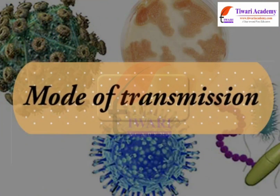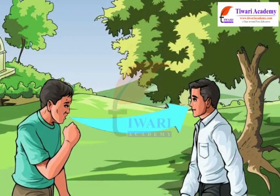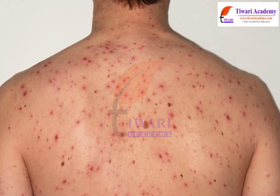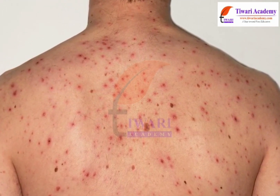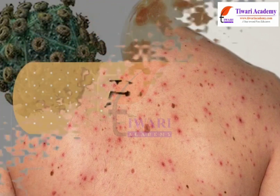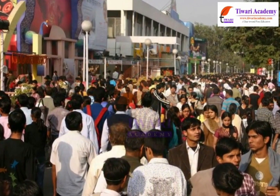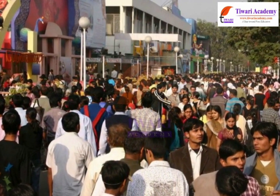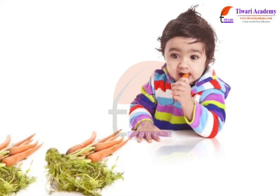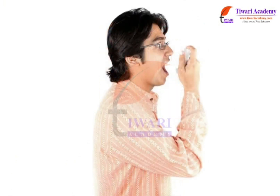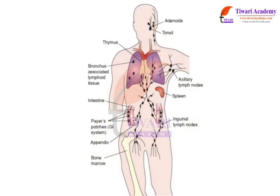Mode of transmission refers to the method of transfer by which the infective agent moves or is carried from one place to another. Some communicable diseases have more than one mode of transmission — e.g., chickenpox can be transmitted by contact or airborne transmission. The host refers to the susceptible population. Young children, elders, and patients with chronic diseases are more susceptible to infection because of weakened body immunity.